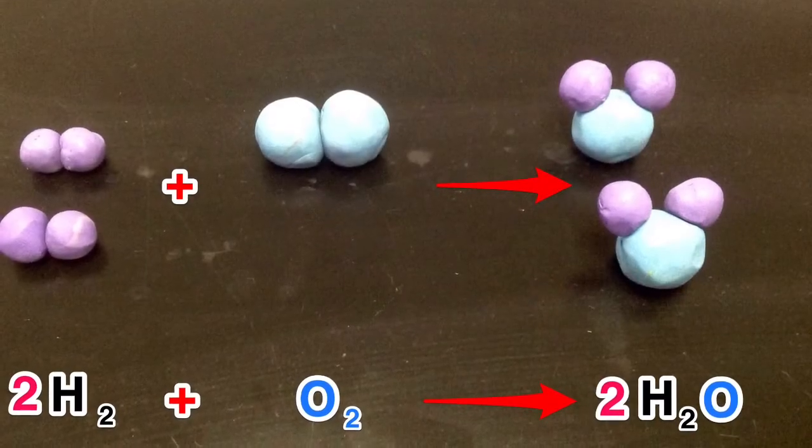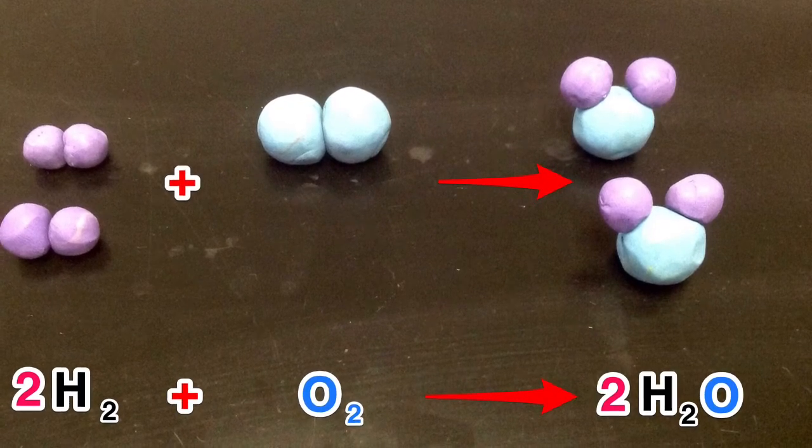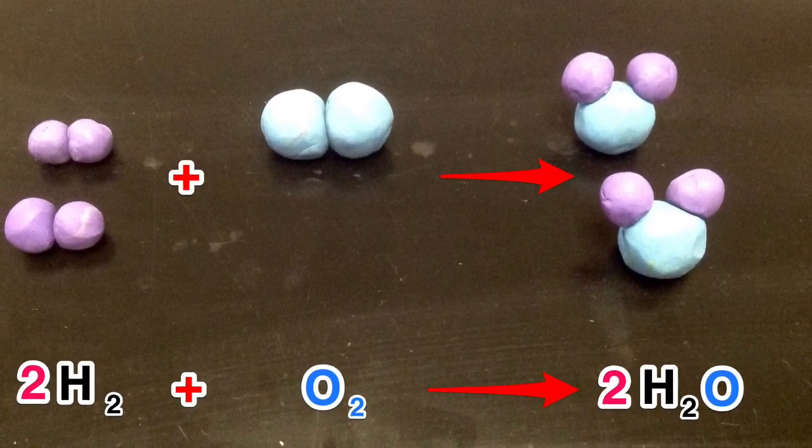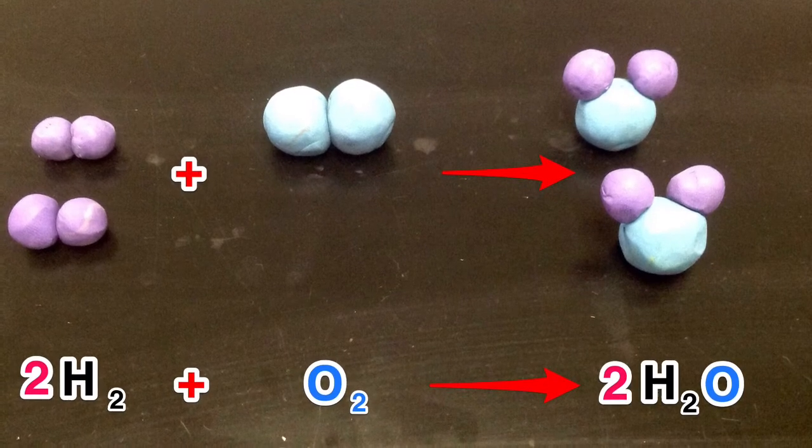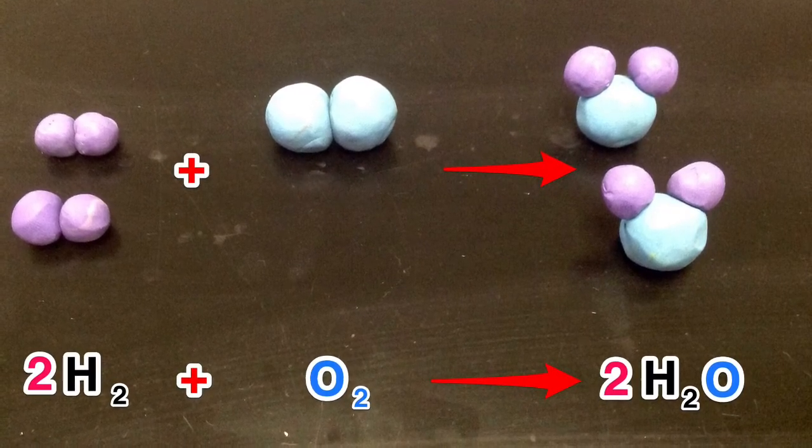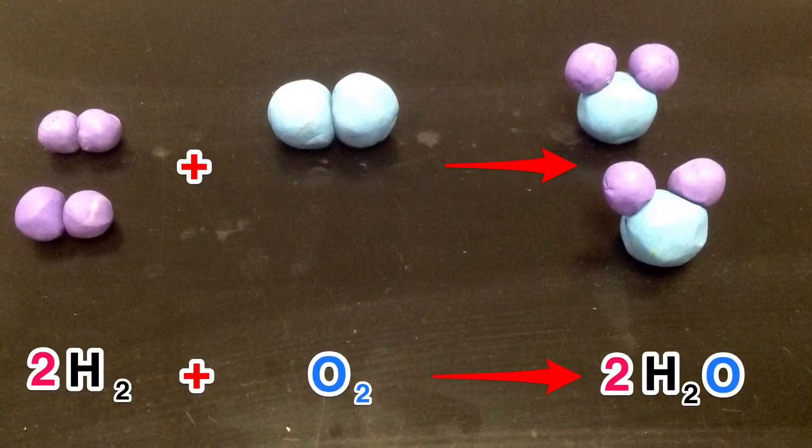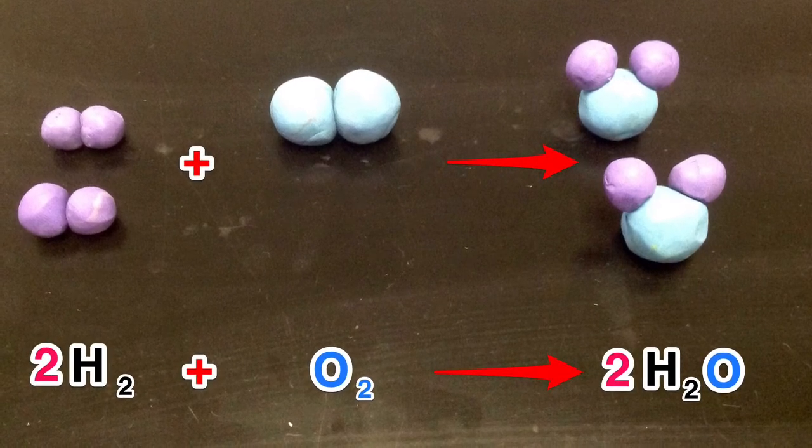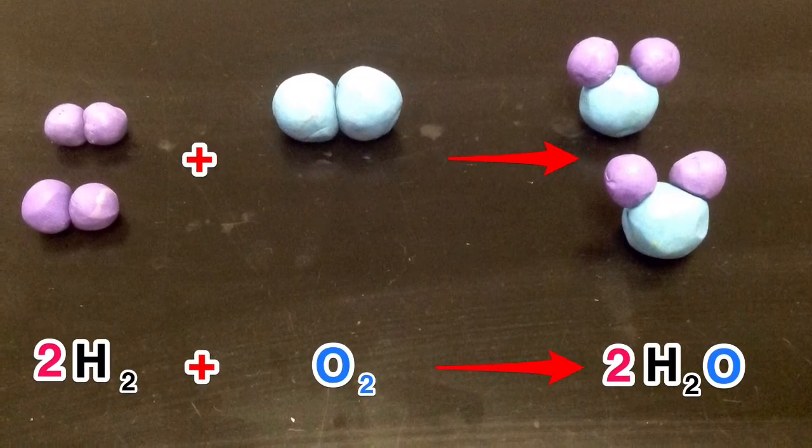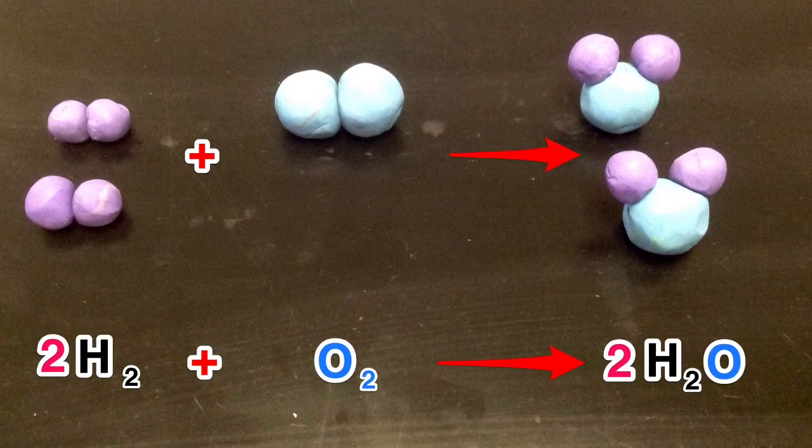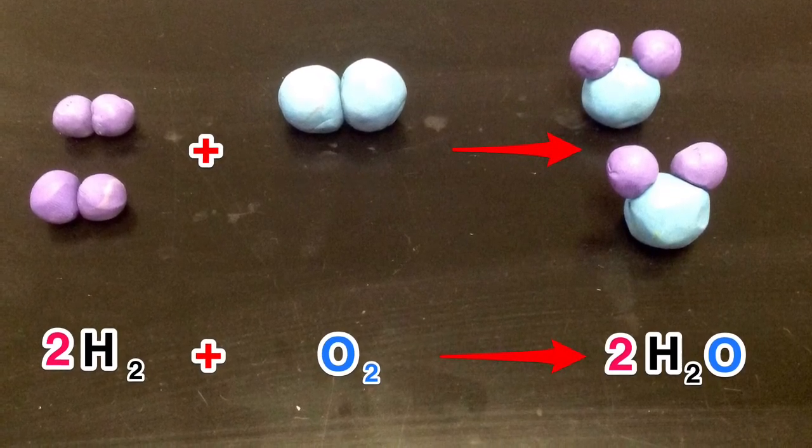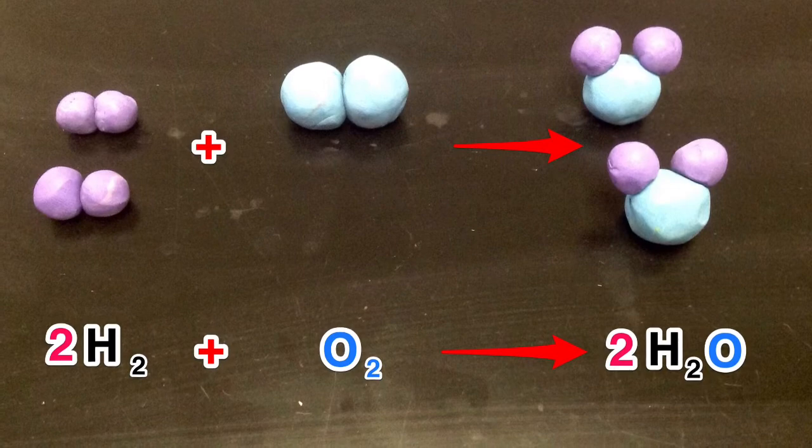We can do this by adding a second molecule of hydrogen on the left. This would give us four hydrogen atoms on the left, four atoms of hydrogen on the right, two atoms of oxygen on the left, and two atoms of oxygen on the right. We now have a balanced equation: 2H2 plus O2 yields two molecules of H2O.